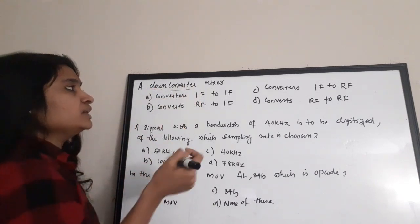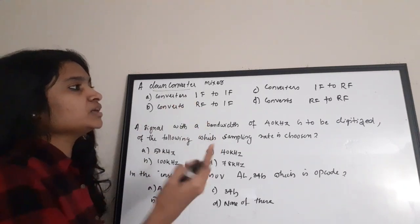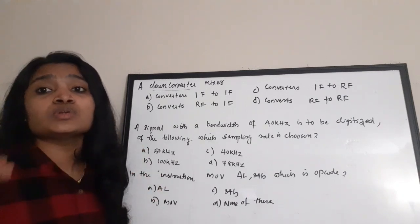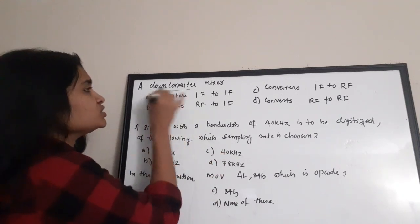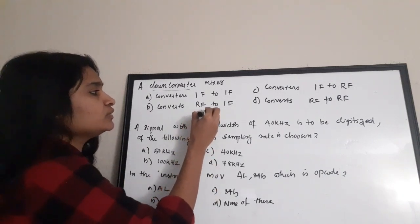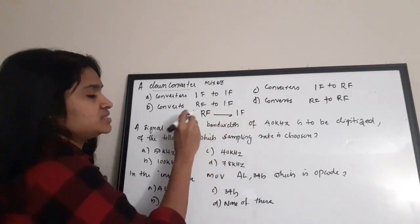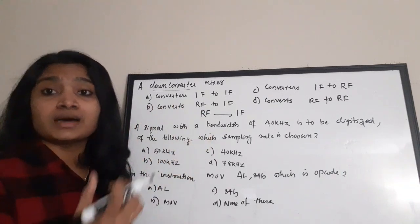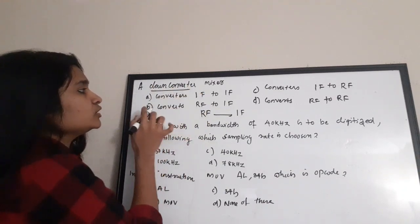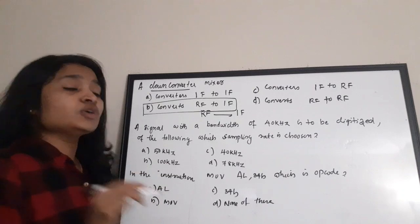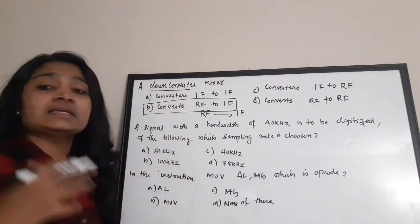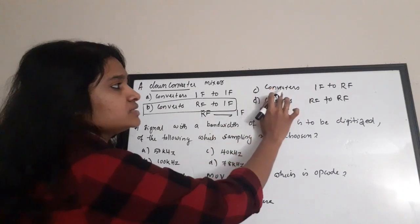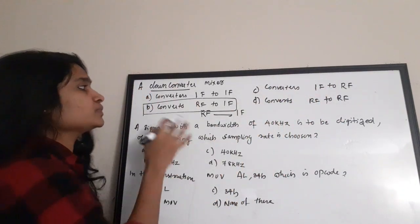A down-converter is used in the receiver path. We receive a radio frequency (RF) signal and convert it back to intermediate frequency (IF), which is a lower value compared to RF — we are reducing the frequency. So a down-converter converts RF to IF. For an up-converter, it converts IF to the higher frequency RF. The correct answer is option B: converts RF to IF.